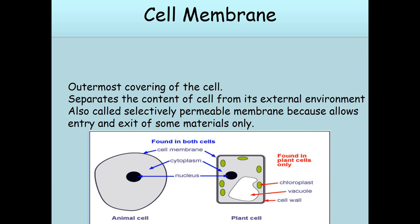Cell membrane. It is the outermost covering of the cell. It separates the contents of the cell from its external environment. It is also called the selectively permeable membrane because it allows entry and exit of some materials only.